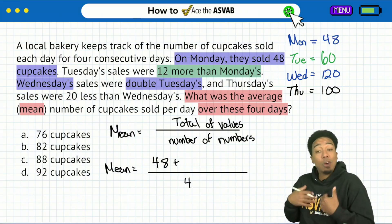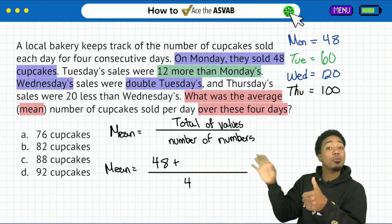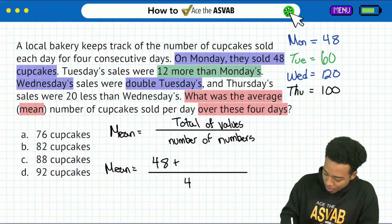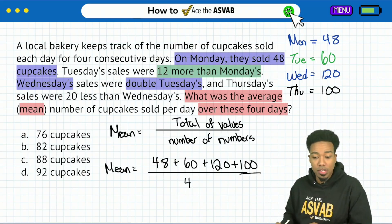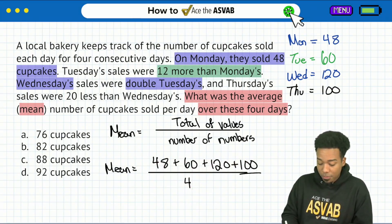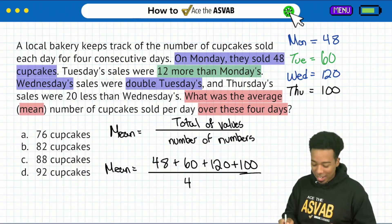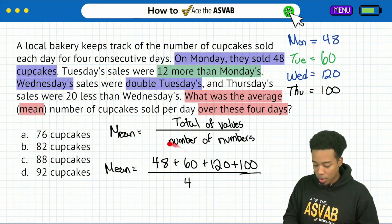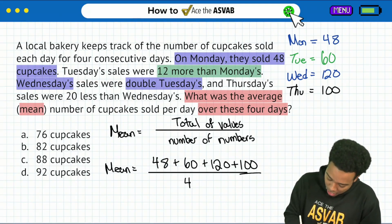Now that we have all that set up, we know we have everything we need to solve the problem. We said we wanted to find the mean — there's our formula. Now we have the numbers we're supposed to plug in. So now all we have to do is plug it in, solve, and we're done. Here we go: 48 plus 60 for Tuesday, 120 for Wednesday, and 100 for Thursday. If we add all of these up — you can do this a couple of different ways, mental math or just add them all up — let's just add them together. 100 plus 120 is 220, 220 plus 60 is 280, then from 280 we add 48, so that's 328.